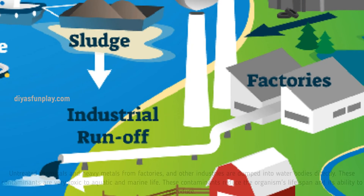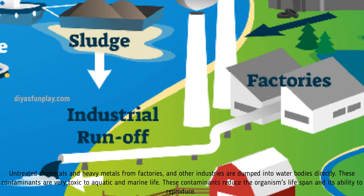Industrial runoff. Untreated chemicals and heavy metals from factories and other industries are dumped into water bodies directly. These contaminants are very toxic to aquatic and marine life. These contaminants reduce the organism's lifespan and its ability to reproduce.